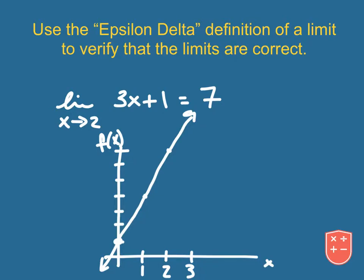What this graph says is that as we travel along this function, we're interested in what's happening at x equals 2. As we travel across the graph from the left side, as we approach 2 from the left and as we approach 2 from the right, the question is what y value are we approaching? And that answer is 7. That's what a limit is — it's wanting to know, as you approach the x value from the left and right, what's the y value.